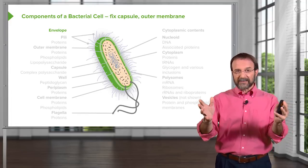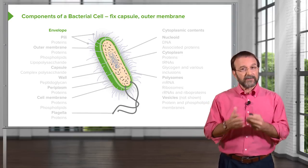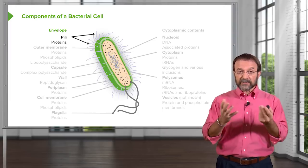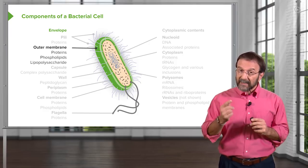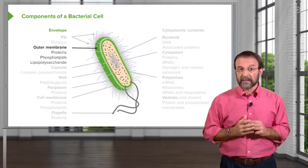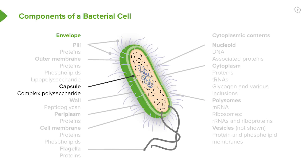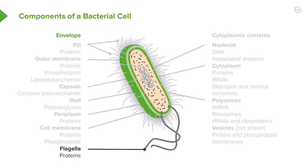Here's an overview of our bacterial cell. Let's go through the individual components and talk about what each one is made of. We have the pili on the exterior, which are needed for movement and are made of proteins. The outer membrane has proteins, phospholipids, and that very unusual membrane component, lipopolysaccharide. The capsule is typically made up of polysaccharides or amino acids. The cell wall is peptidoglycan. The periplasm spaces between the walls and the membranes typically have proteins in them. The cell membrane has phospholipids and protein, and the flagella are made of proteins as well.